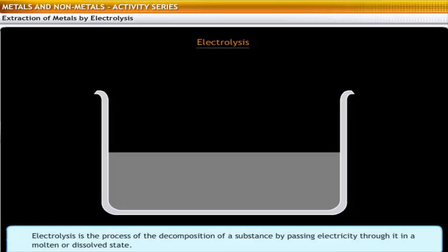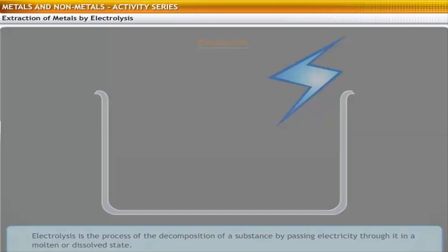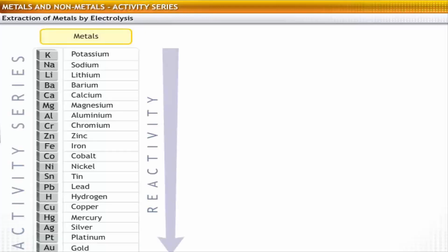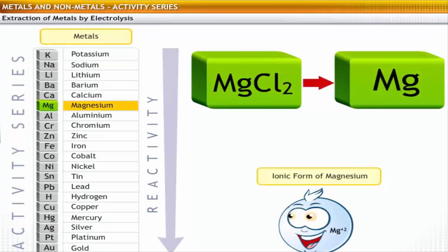Electrolysis is the process of decomposition of a substance by passing electricity through it in a molten or dissolved state. Consider magnesium chloride ore: magnesium is highly reactive and therefore cannot be reduced by common reducing agents like carbon, carbon monoxide and hydrogen.